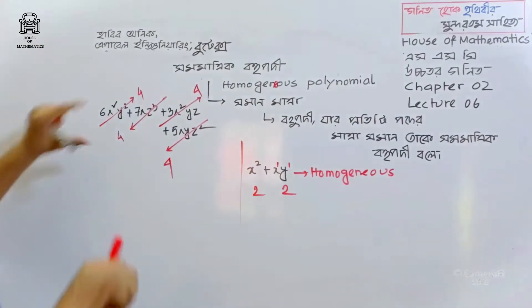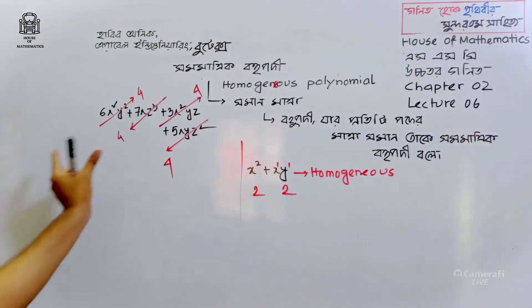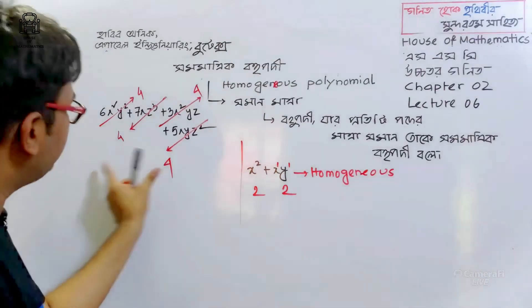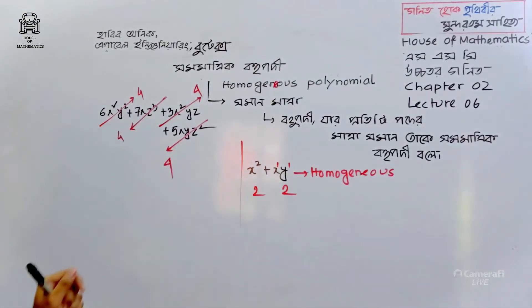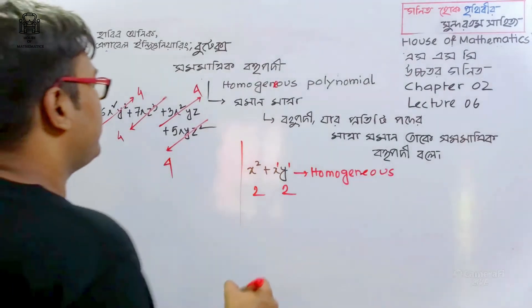That's great. Fine. We can see from this example that every term has the same degree, which confirms this is a homogeneous polynomial. Okay, cool.